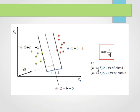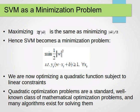We want to maximize 2/|w| such that for all points from the positive class, w·x + b ≥ 1, and for the negative class, w·x + b ≤ -1. Maximizing 2/|w| is the same as minimizing |w| over 2. So SVM becomes a minimization problem: minimize |w| such that y_i(w·x_i + b) ≥ 1 for all i.